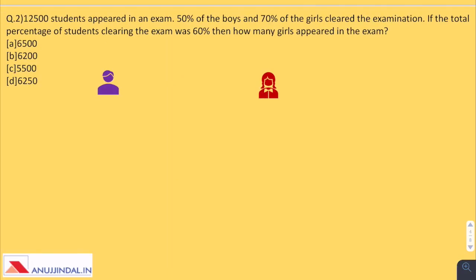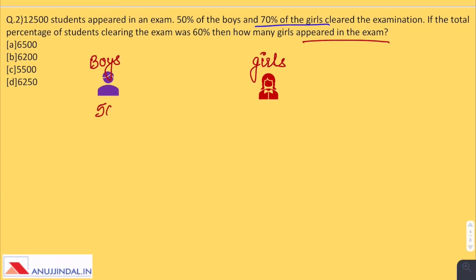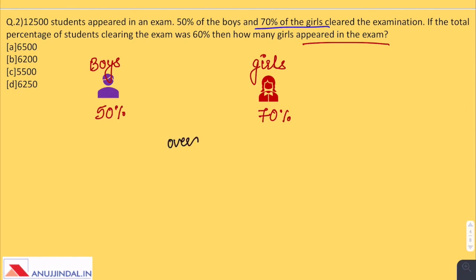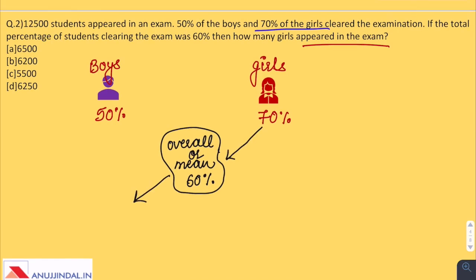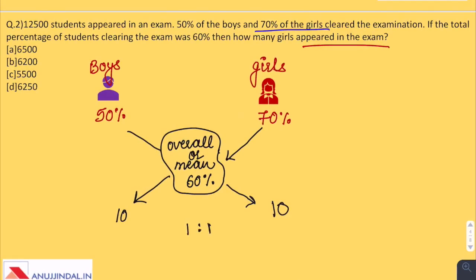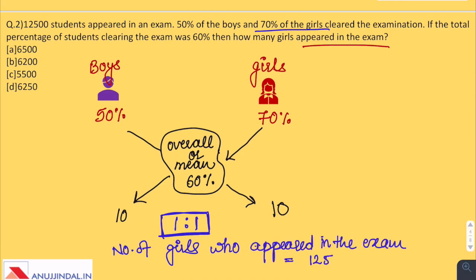Question 2: 12,500 students appeared in an exam. 50% of boys and 70% of girls cleared the examination. If the total percentage of students clearing the exam was 60%, how many girls appeared in the exam? Using the alligation method with boys at 50%, girls at 70%, and mean at 60%, the difference on each side is 10. So the ratio of boys to girls is 1 to 1, meaning equal numbers appeared. Therefore, the number of girls = 12,500 ÷ 2 = 6,250 girls. Answer: Option D.